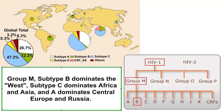Africa possesses far more of the subgroupings of HIV than any other continent. Europe and North America are dominated by a very narrow range of viral types, the Group-M subtype B. This is suggestive, but not confirmatory, of an African origin for the parent strains.